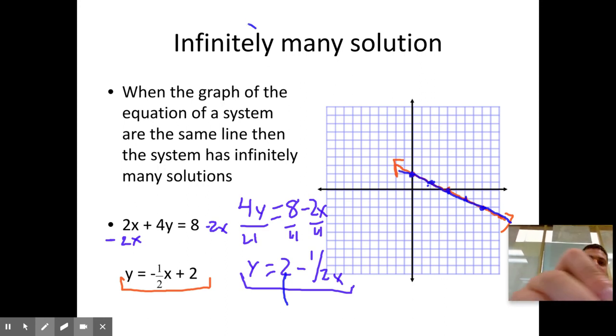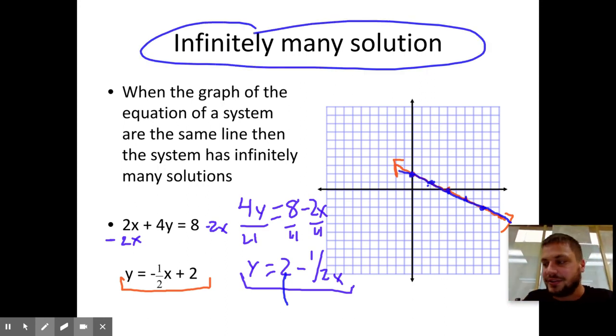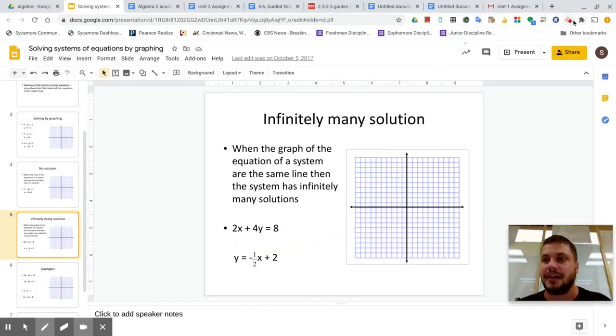They touch infinitely many times, infinitely many solutions. Of course, the symbol for infinity is a sideways 8. So tips: always get the y by itself before you start graphing. Don't graph until the y is by itself. Make the first line as long as possible. The answer is where the two lines intersect. All right, see you in class.